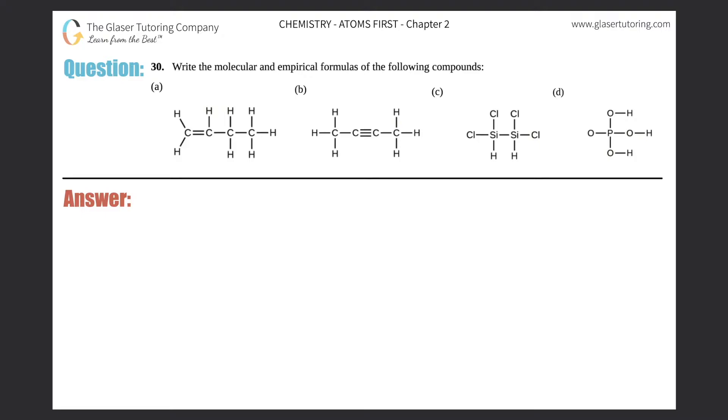Number 30: write the molecular and empirical formulas of the following compounds. Then I have a through d, so I'm just going to write that out a, b, c, and d. We did one just like this, so if you need a full refresher on the difference between molecular and empirical formulas, go back to number 29. If you're on the playlist, just click the back button and there you go.